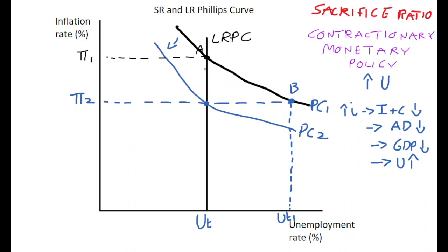We get Phillips Curve 1 and short-run Phillips Curve 2. At point C, the economy is back to a relatively low unemployment level and an inflation level that has reduced. The only problem is what happens from A to B.